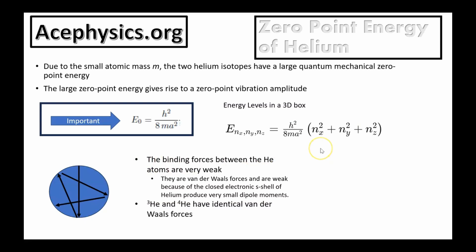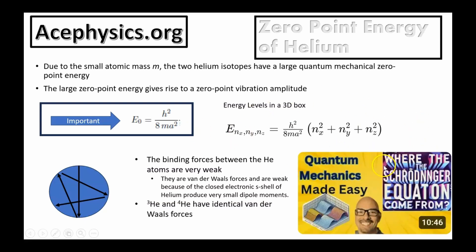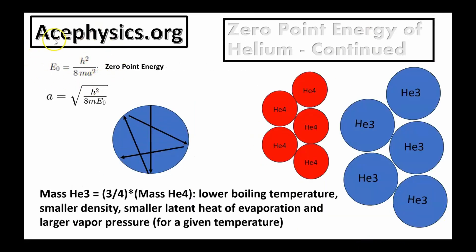I also want to discuss the binding force between helium atoms. The binding forces between helium atoms are very weak — these are known as Van der Waals forces. Both isotopes, helium-3 and helium-4, have identical Van der Waals forces. Solving the zero-point energy formula for A, the characteristic length goes as 1 over the square root of m. The importance is that helium-3 has a larger vibrational radius than helium-4 because helium-3 has a smaller mass. Since the dipole interaction depends on 1 over r-cubed, liquid helium-4 is bound more strongly than liquid helium-3 at the same temperature.